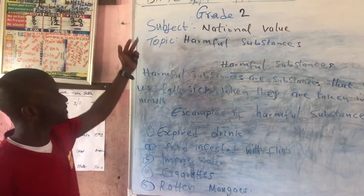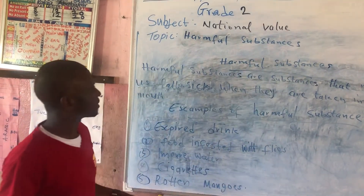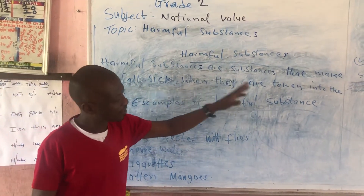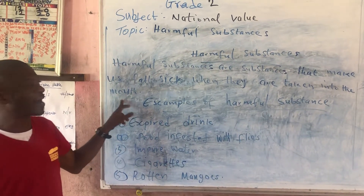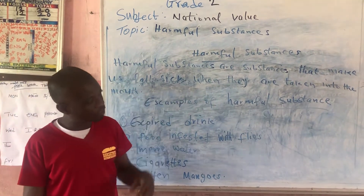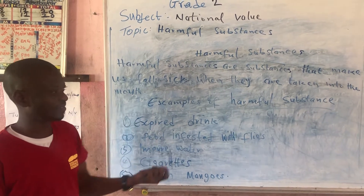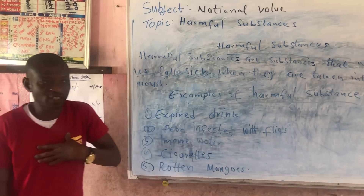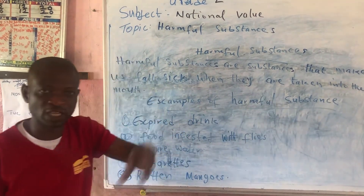National value subject topic: harmful substances. We say harmful substances are substances that make us fall sick when they are taken into the mouth — it could be by injecting or taking into the mouth. These are ways in which harmful substances affect us. Now we look at examples of harmful substances.